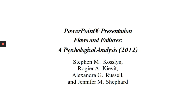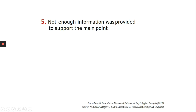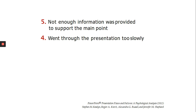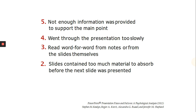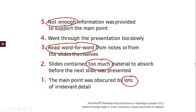Here are some insights from research done by Stephen Gosselin about the most annoying and most frequent PowerPoint failures: inadequate information was provided to support the main point; went through the presentation too slowly; read word by word; slide contained too much material to absorb before the next slide was presented; the main point was obscured by a lot of irrelevant details. So lots, too much, and reading word for word are all consequences of having too much material and not enough information.